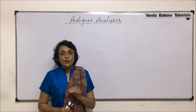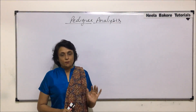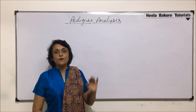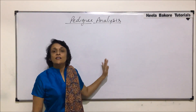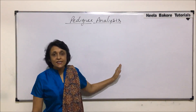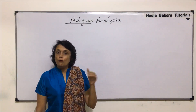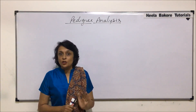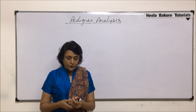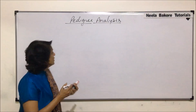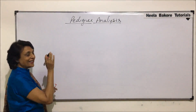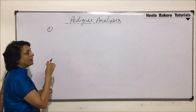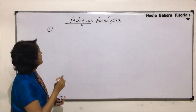We have seen the symbols in the previous segment. Now using those symbols, we are going to plot the pedigrees and we'll understand how we plot the pedigree and how we interpret the genotype of the offspring. So let us write down one case, or one question we can say.